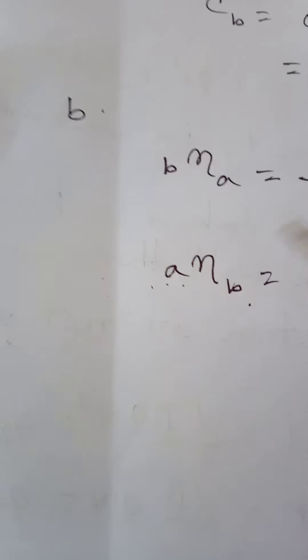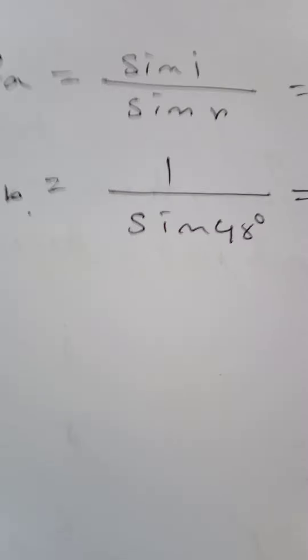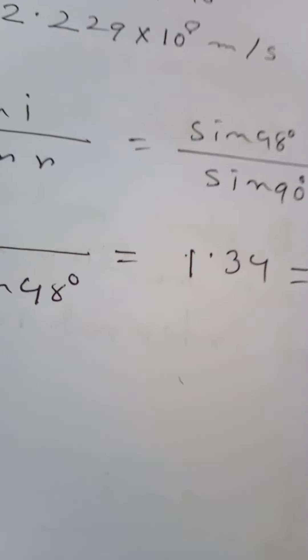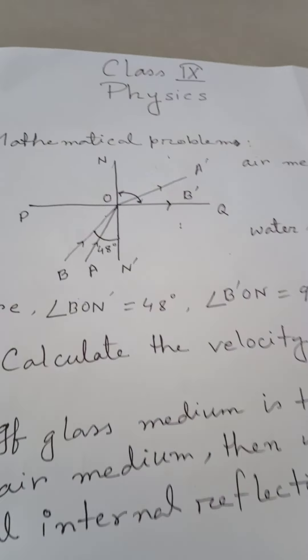This can also be written simply as nB, because if the left-side medium is air or vacuum, there is no need to write it explicitly. Air medium and vacuum are taken as almost the same. If there is no index on the left side, it means light is coming from air medium. So from the given figure we find nB = 1.34.